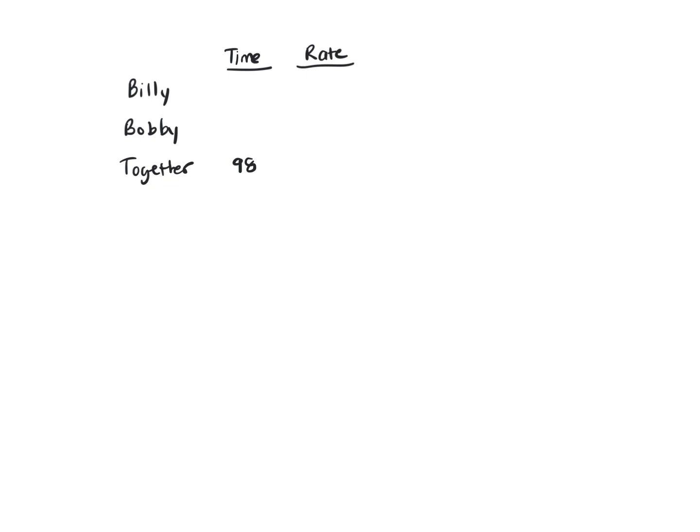And it says Billy can mow the lawn by himself in 40 minutes less time than it would take Bobby. So we don't know Bobby's time, so we're going to call it X, but we know that Billy's time, he can mow it in 40 minutes less than Bobby, so that would be X minus 40.